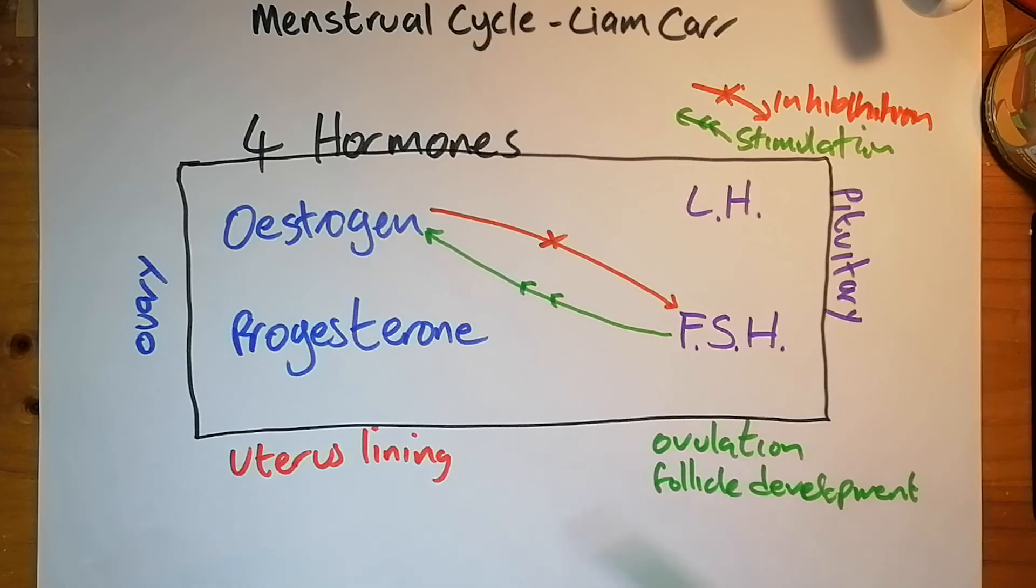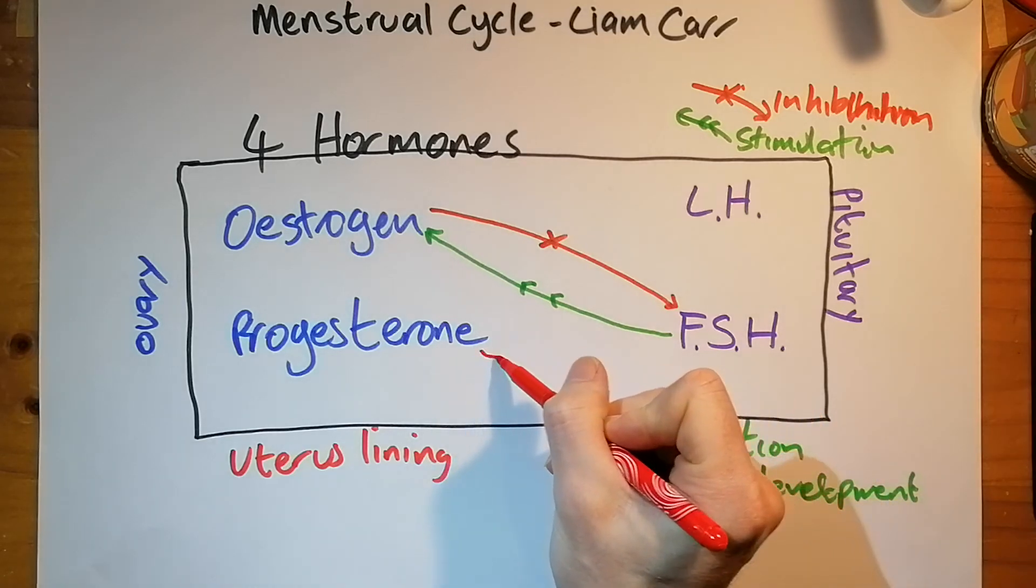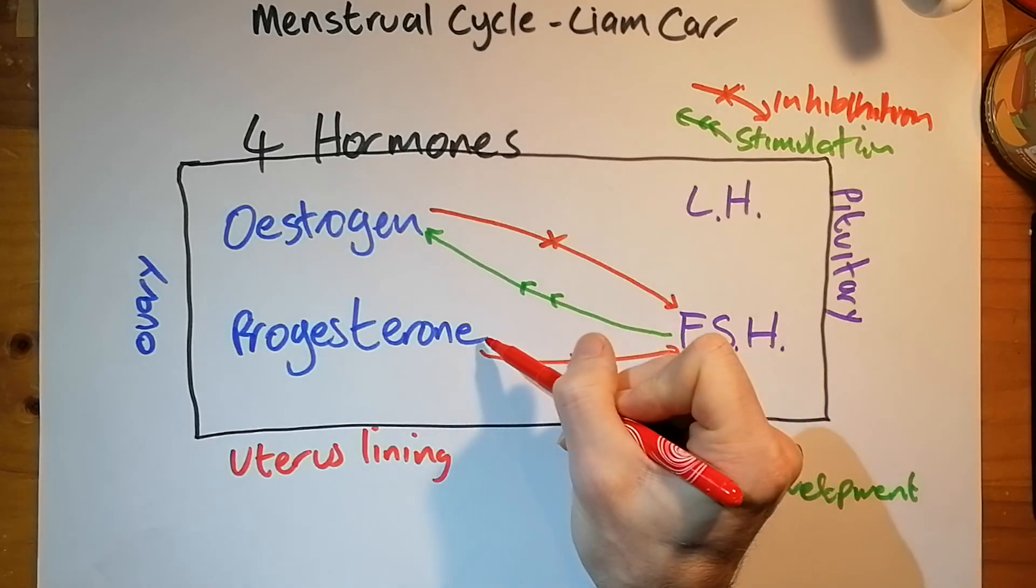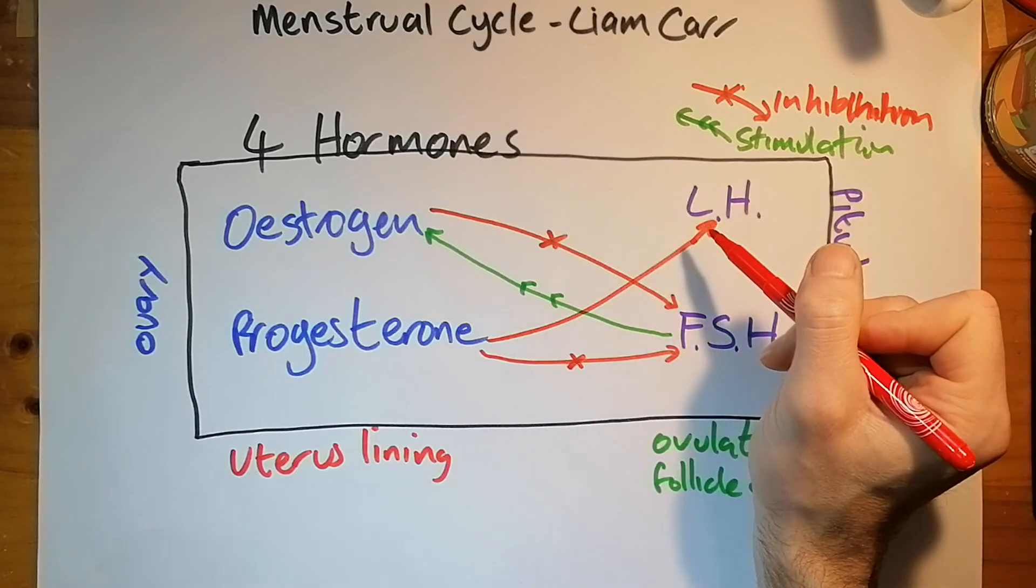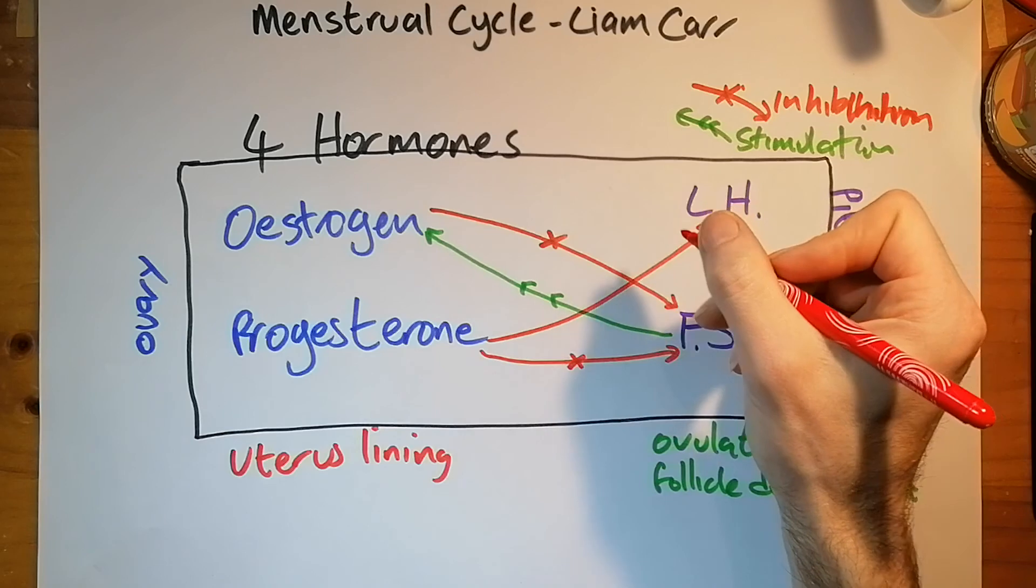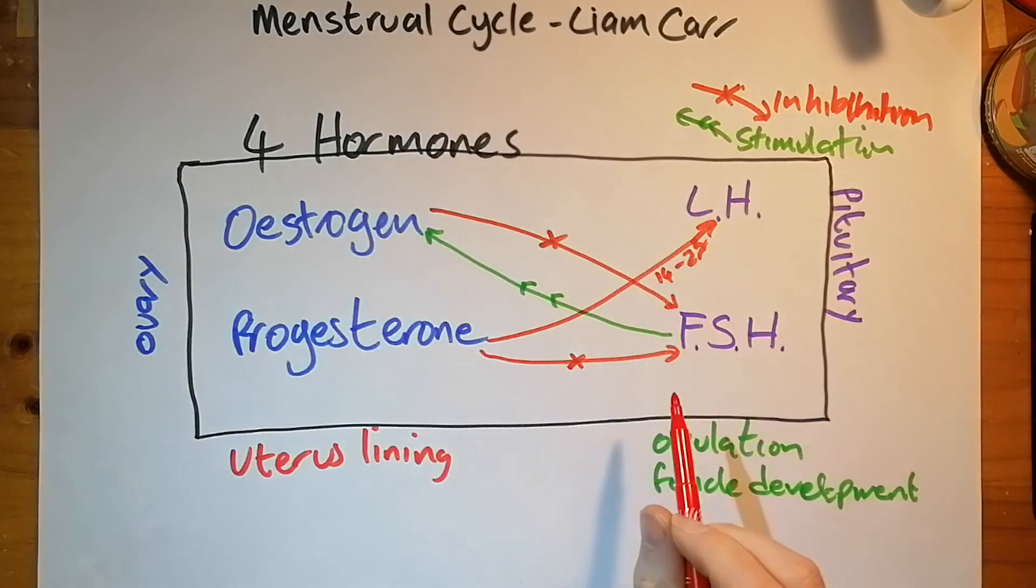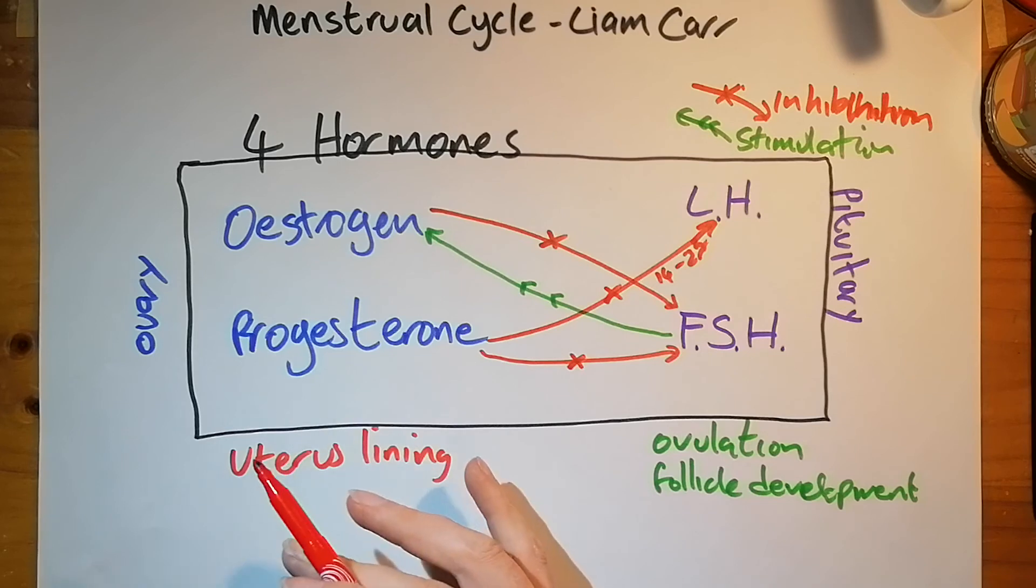Progesterone, interestingly, inhibits both FSH and it inhibits LH. So you don't release LH in between 14 and 28 days in the cycle. And that's why progesterone is very useful as contraceptive.